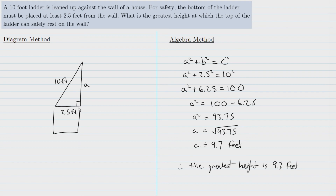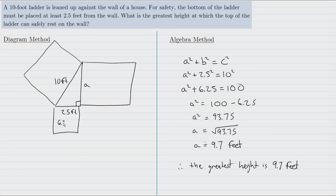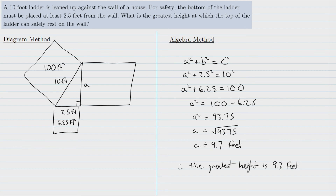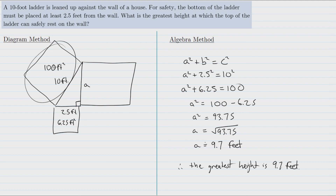We can arrive at this result using only the diagram by drawing squares on each side of the triangle. The area of the square on the 2.5-foot side is 2.5 times 2.5, which is 6.25 feet squared. The area of the square on the 10-foot hypotenuse is 10 times 10, which is 100 feet squared. Since that square is built on the hypotenuse, the two smaller square areas must add up to 100 feet squared.